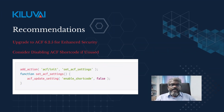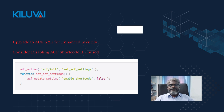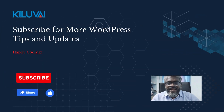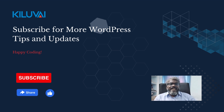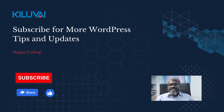Before we wrap up, a quick reminder: upgrade to ACF 6.2.5 immediately for enhanced security. If you are not using the ACF shortcode, consider disabling it. That's it for today's guide on navigating the changes in ACF 6.2.5. If you found this video helpful, don't forget to like, subscribe, and hit the notification bell for more WordPress development tips. Happy coding and see you in the next video.